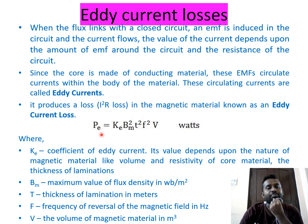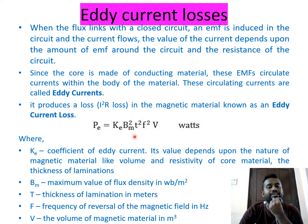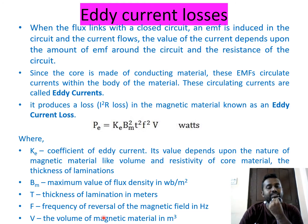Eddy currents produce an I²R loss in the magnetic material known as eddy current loss, given by: Pe = Ke × Bmax² × t² × f² × V, where Ke is the coefficient of eddy current depending on the nature and resistivity of the magnetic material, Bmax is the maximum flux density (in Wb/m² or Tesla), t is the thickness of laminations, f is the frequency, and V is the volume.